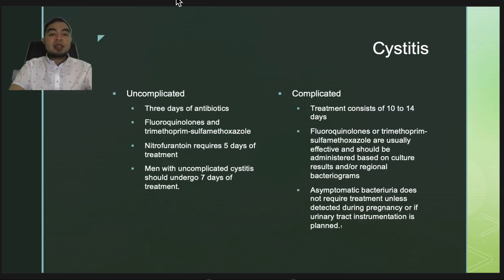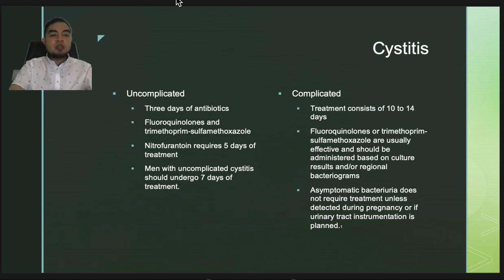Treatment consists of three days of antibiotics, which are generally sufficient for uncomplicated cystitis. Fluoroquinolones and trimethoprim-sulfamethoxazole are well tolerated and easily available. Nitrofurantoin, also commonly used, requires at least five days of treatment. Men with uncomplicated cystitis should undergo seven days of treatment.